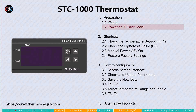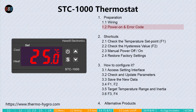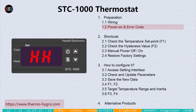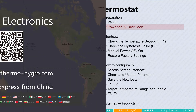Once the power is turned on, it will perform a self-test. Next, it shows the room temperature, just as you see it now — we call it the normal state. If it shows any error codes, please find the solution from our website.